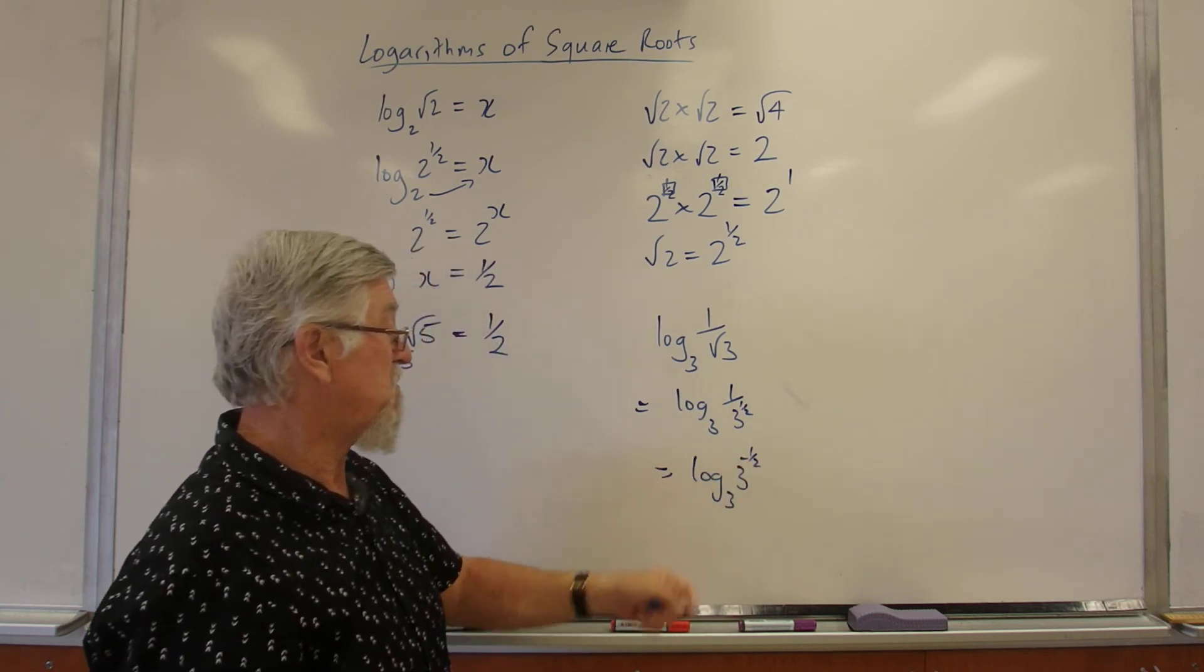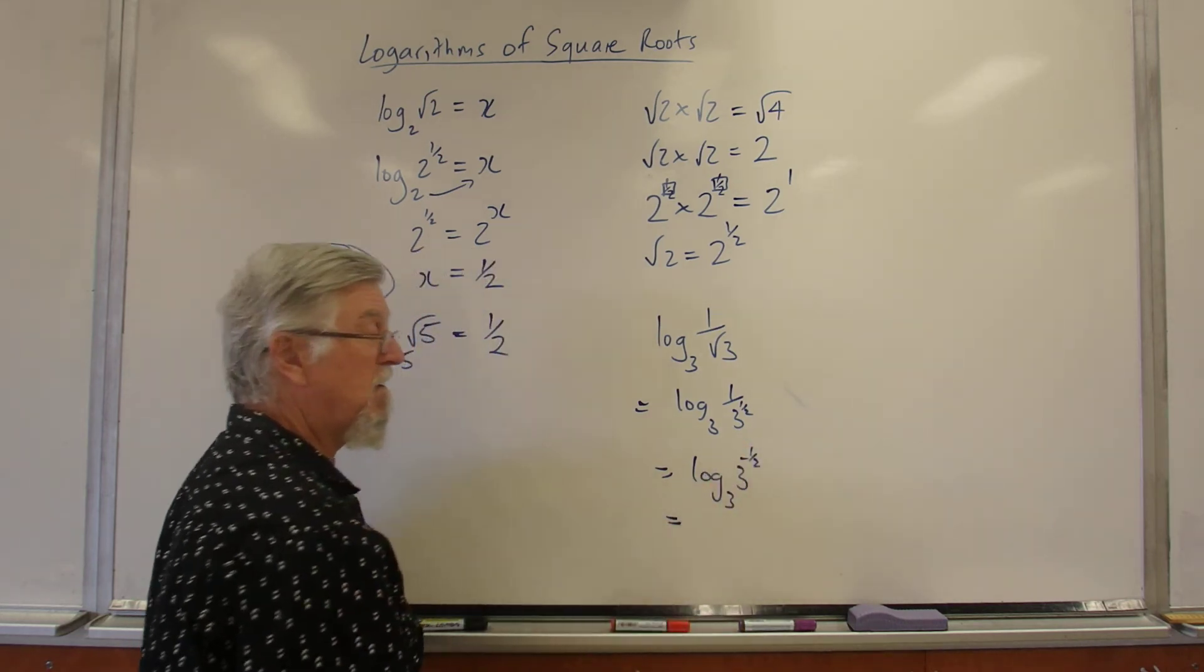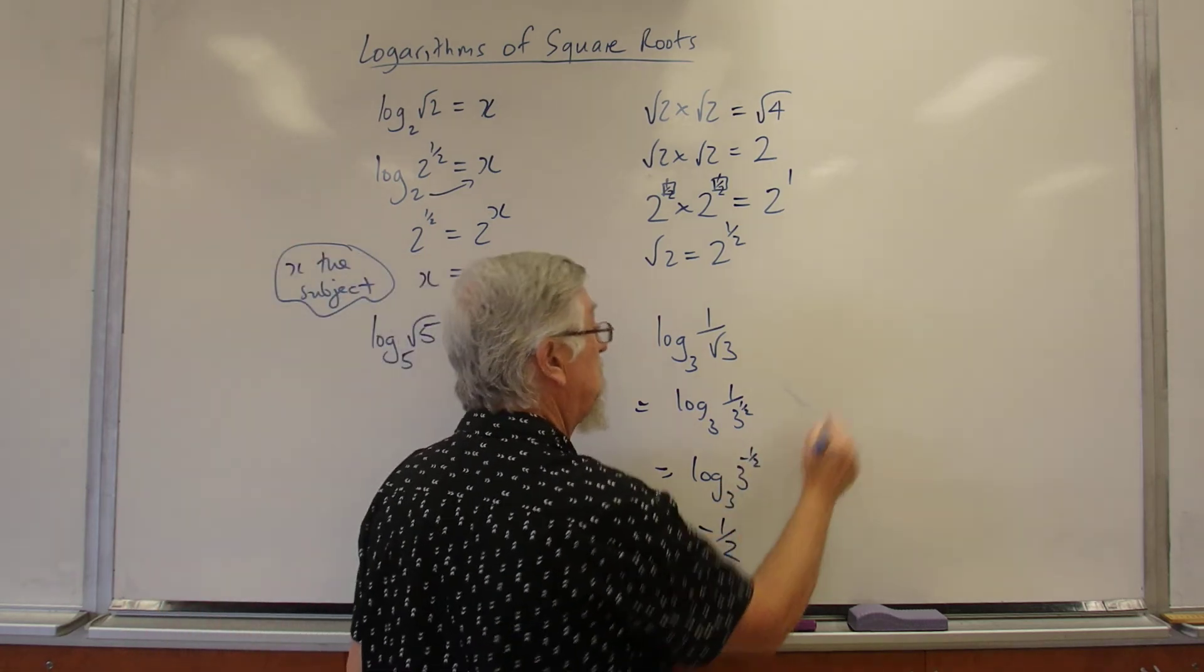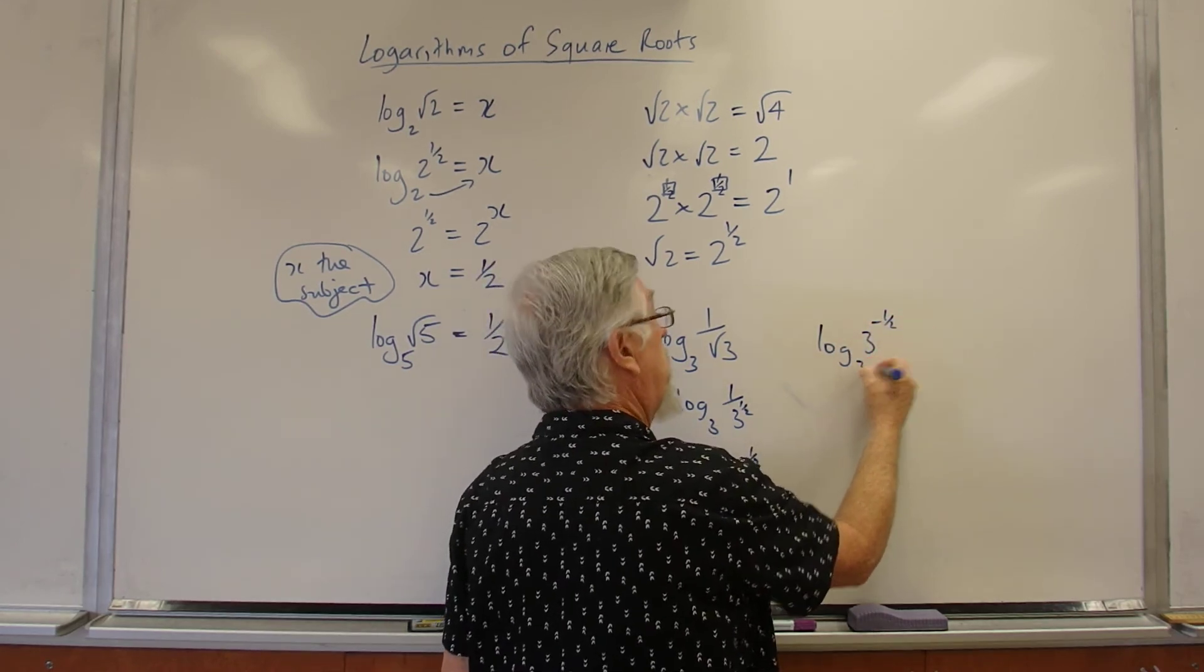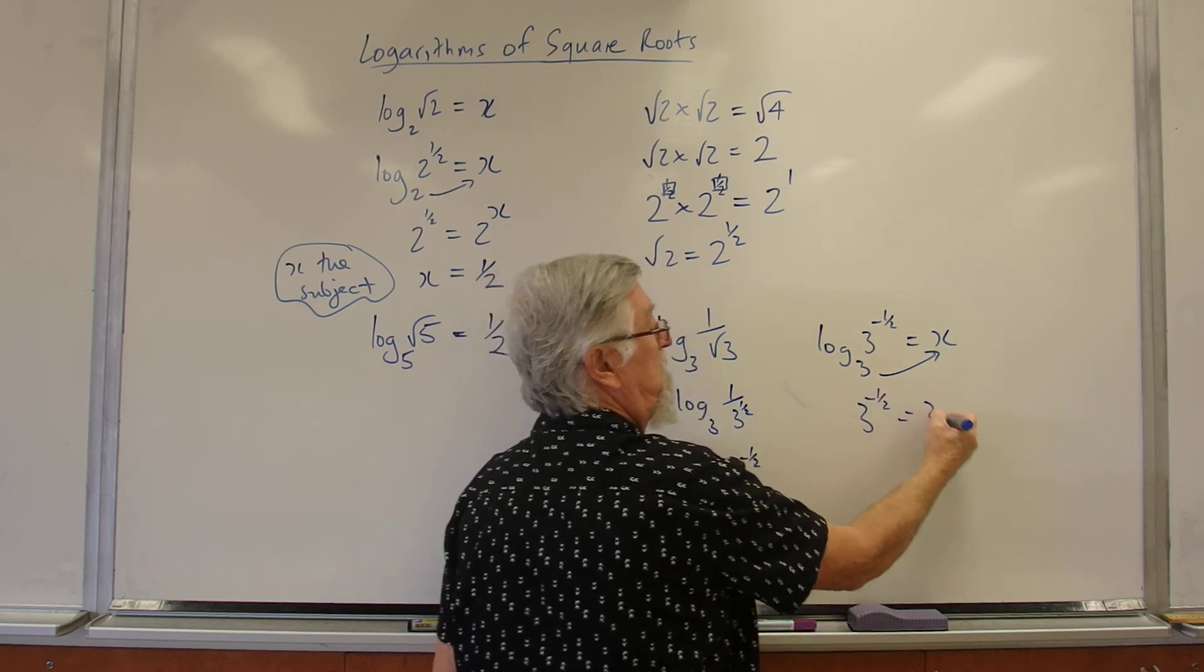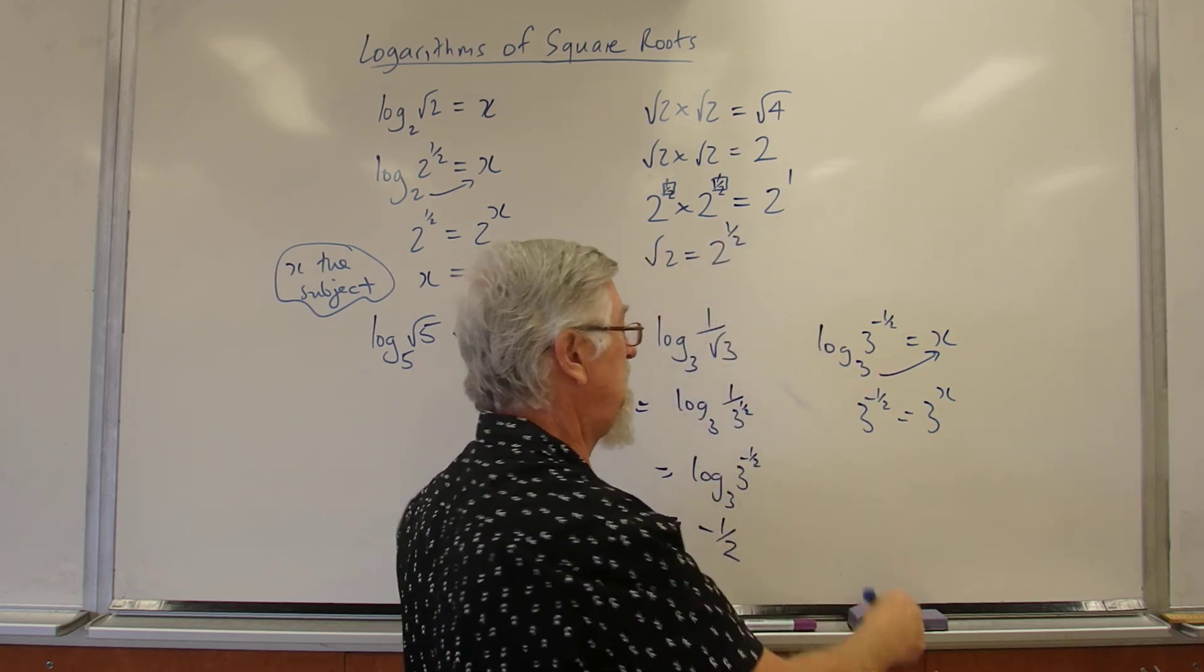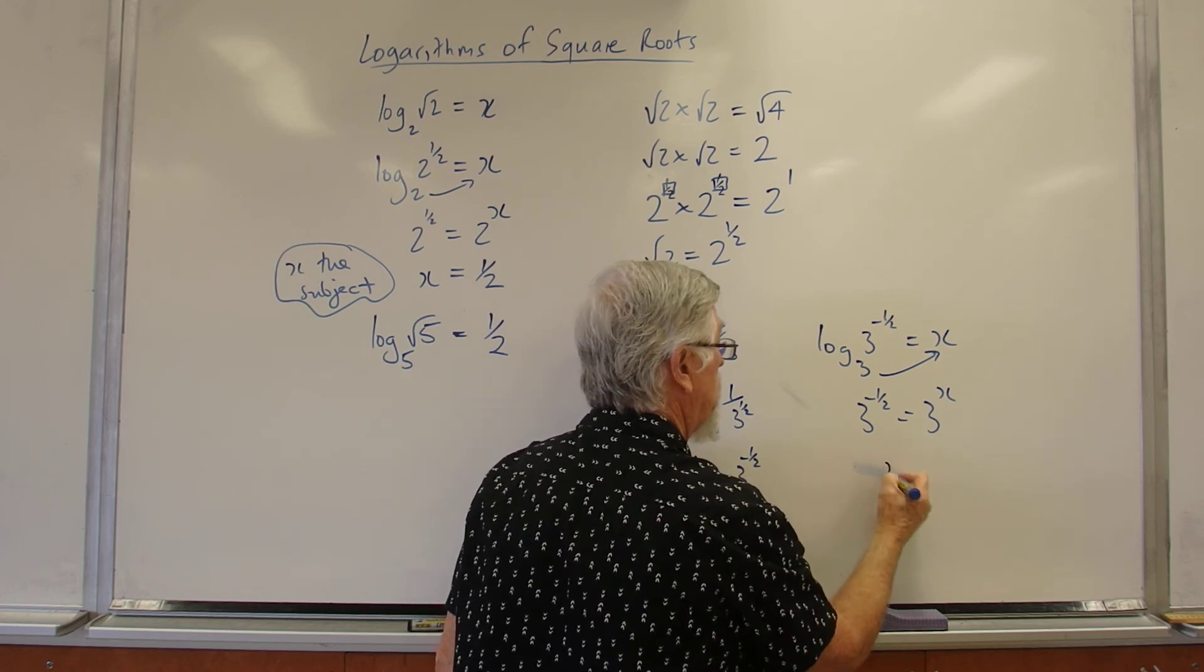So now I've got this question here. 3 to the what is minus the half. If I decide to do that as the log of 3 to the minus the half, base 3 with an x. And we use the squish method, I've got 3 to the minus the half, which is 3 to the x. Once they're both 3s, then I can make an equation out of the indexes, the indices, and I've got x equal minus the half.